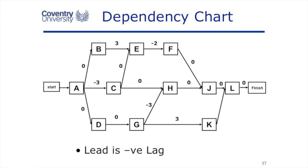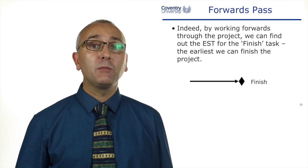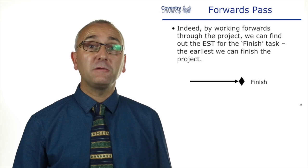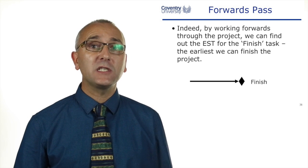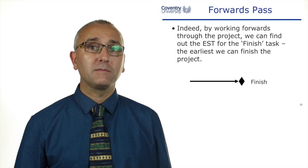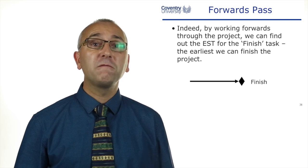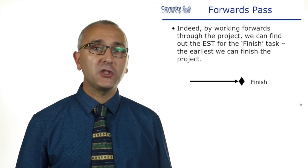Looking at the dependency charts, we can calculate the earliest start time for each task based on the duration. We'd start with task A, we'd work our way through, we'd consider the lead and lag, and we'd work all our way to the finish task. We can find out the earliest possible starting time for the end of the project, for the finished task. That would represent the soonest we can finish the project. And that's what a forwards pass or a forward schedule is.